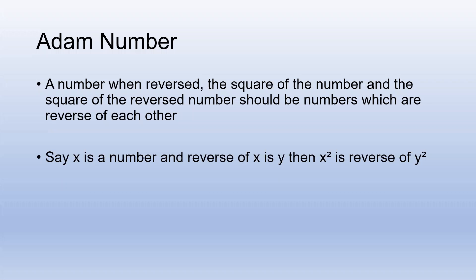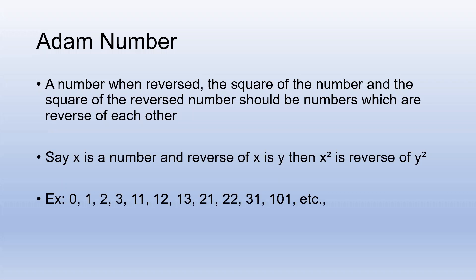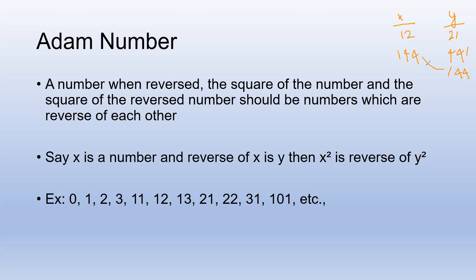Some examples of Adam numbers are 0, 1, 2, 3, and so on. Let me pick a number from this list — say 12. So my x is 12. Y is the reverse of x, that is 21. Then x squared is 12 squared, which is 144. And y squared is 21 squared, which is 441. The reverse of y squared (441) is 144, which is exactly equal to x squared. So we can call 12 an Adam number.